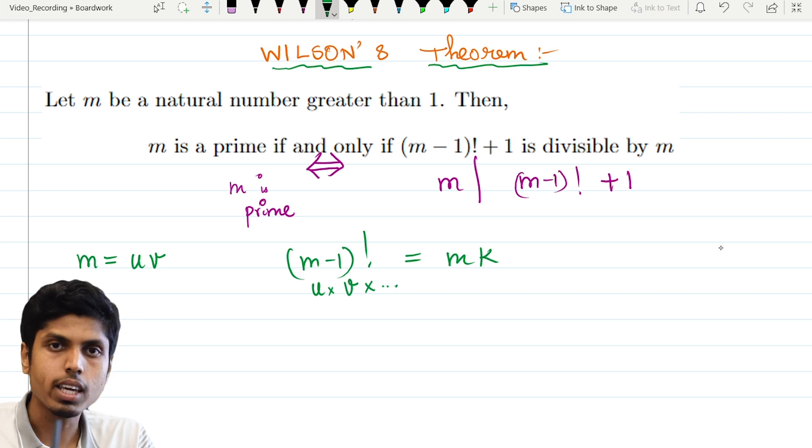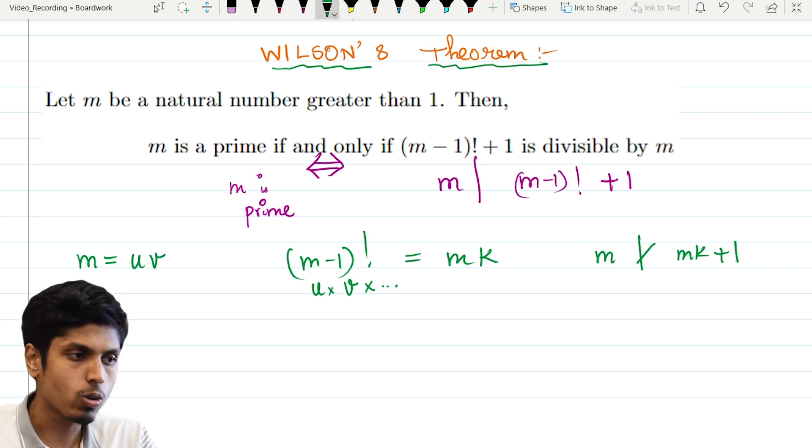So you can write u times v into the remaining numbers in the m minus 1 factorial, making it as m times k. So it will be a product of m and hence m won't divide m k plus 1, right? So if m divides m k, it of course does not divide its next number. And that's why a composite number cannot satisfy this property. So m is a prime.